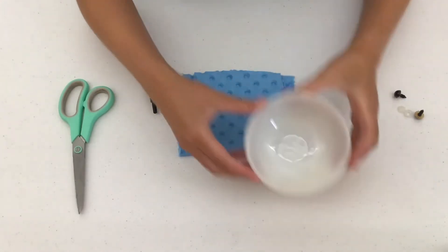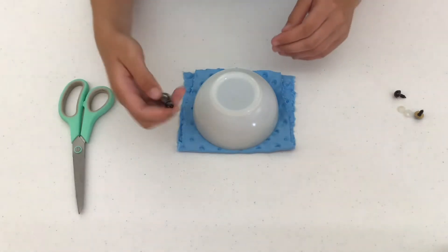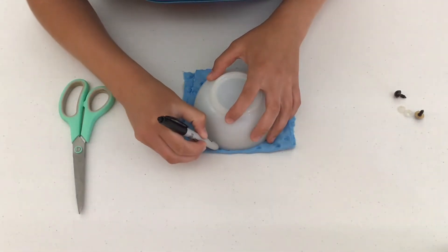To start, fold your fabric scrap in half and take your cup or bowl and trace around it in a circle, then cut this circle out through both layers of fabric.